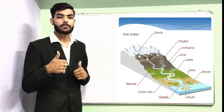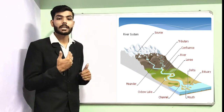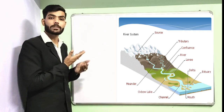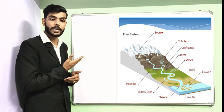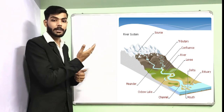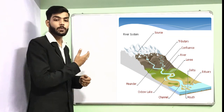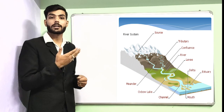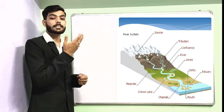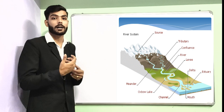Moving to the work of a river: in the diagram you can see the river system, which includes the source from which the river originates, then the tributaries, the continents, the meanders, the oxbow lakes, the levees, the deltas, the channels, the estuaries, and the mouth.